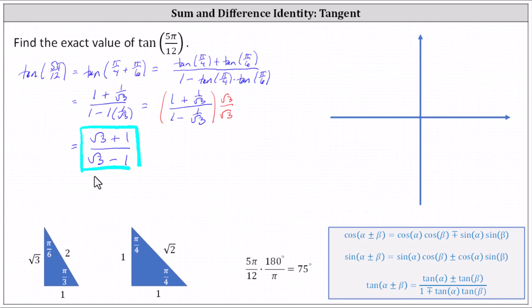This gives us square root three plus one divided by square root three minus one, which is a perfectly acceptable exact value for the tangent of five pi divided by 12. However, to also show the rationalized form, we multiply the numerator and denominator by the conjugate of the denominator. The conjugate of square root three minus one is square root three plus one.